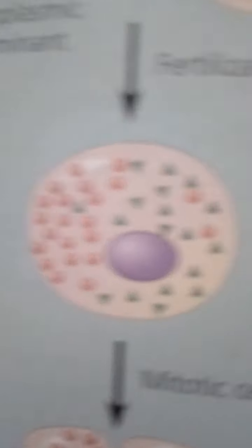In animals, pattern formation is mostly limited to embryos and juveniles, except in those species where lost parts can be regenerated.